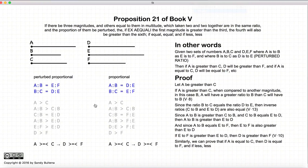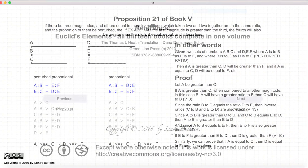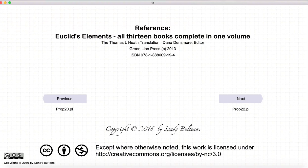So, just in conclusion, if we have the perturbed proportional, in other words, A to B is equal to E to F, and B to C is equal to D to E, then we have this relationship here where if A is greater than C, D is greater than F, and so on and so forth. And that concludes this video presentation. To see the next presentation, just click the Next button.